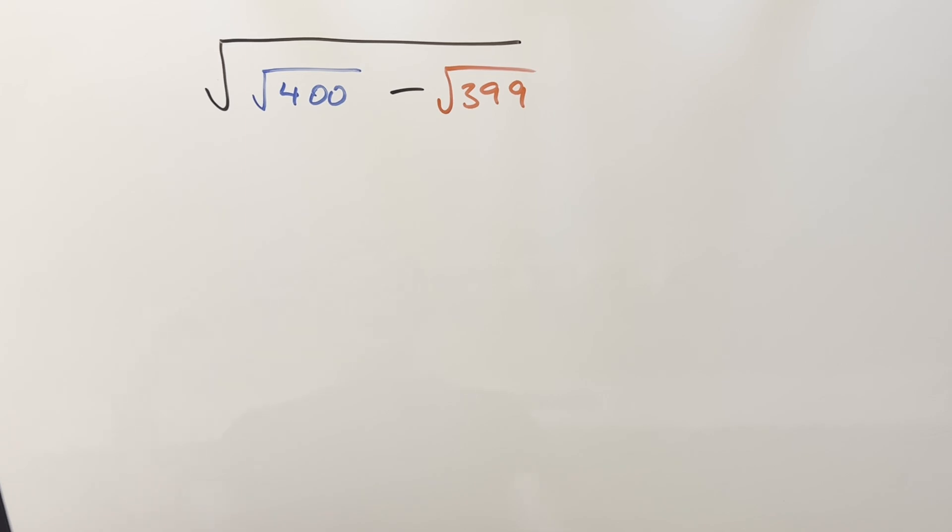We have here a nice nested radical problem today. We've got the square root of the square root of 400 minus the square root of 399.